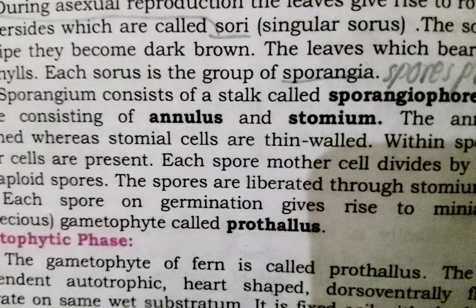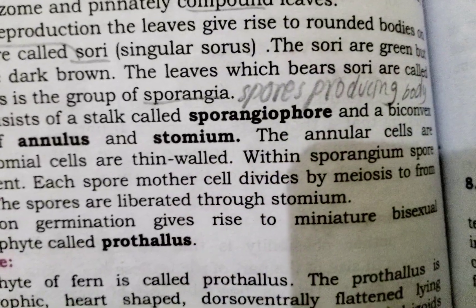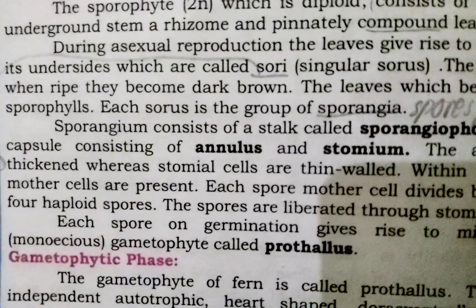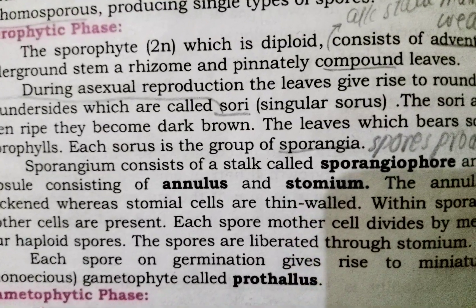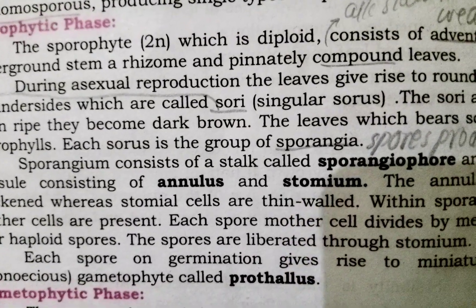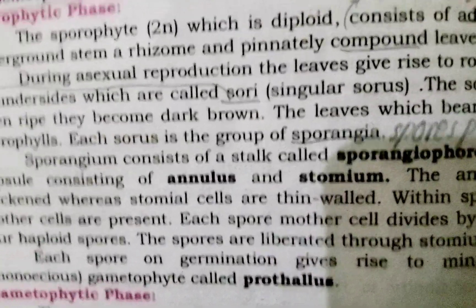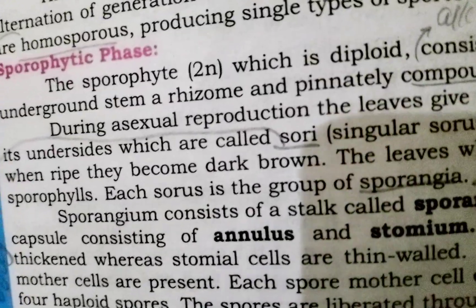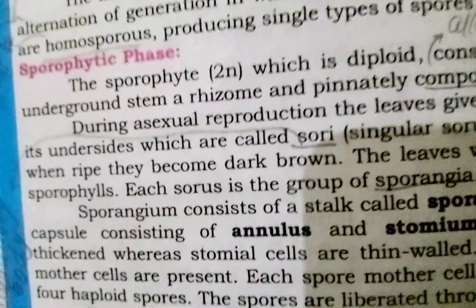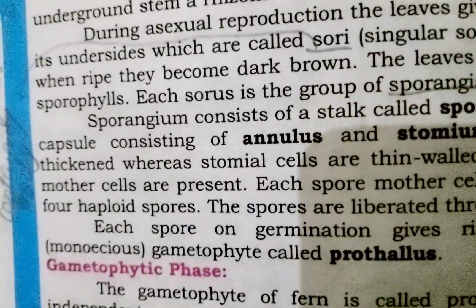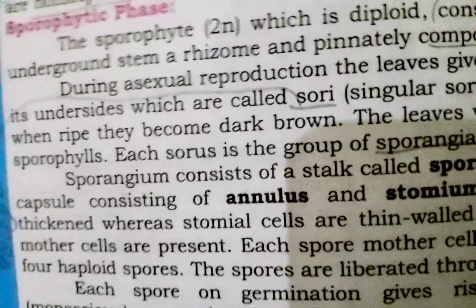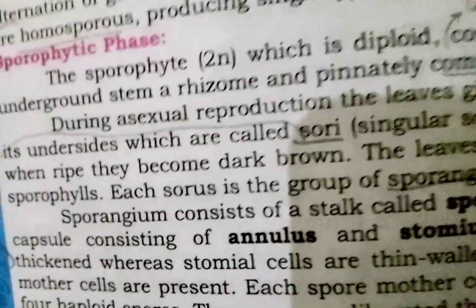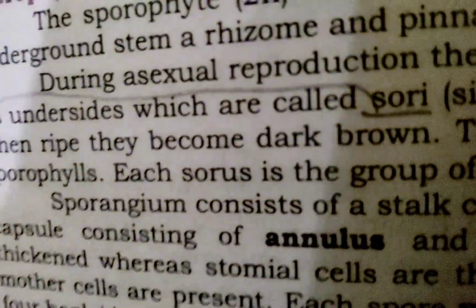Each spore on germination gives rise to a miniature bisexual monoecious gametophyte called the prothallus. The spores generate the gametophyte body, and the starting body of the gametophyte is called the prothallus.